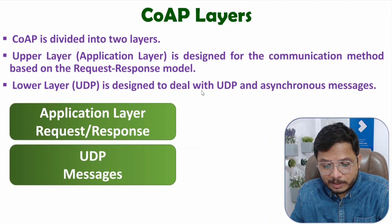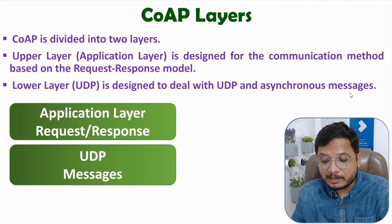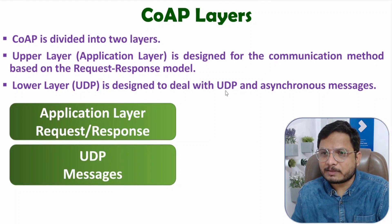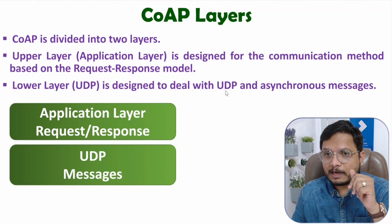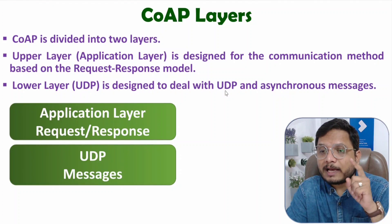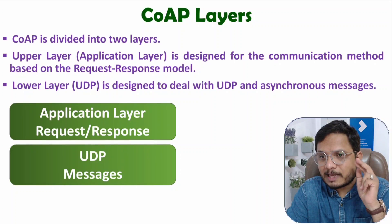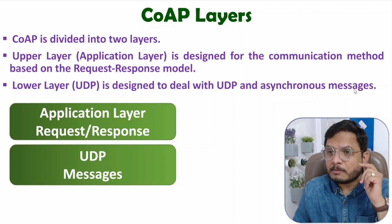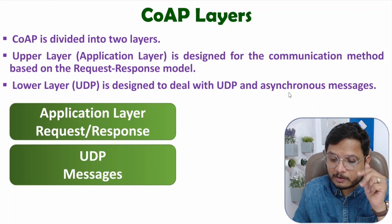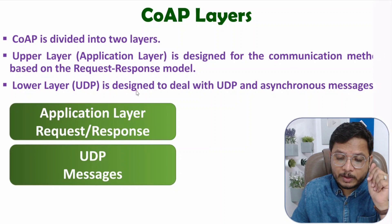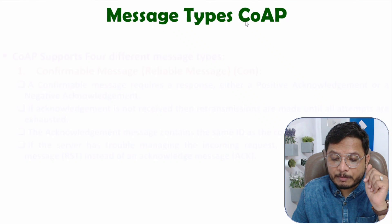The lower layer is UDP, designed to deal with UDP and asynchronous messages. The lower layer mainly functions with UDP protocol. CoAP protocol works with both synchronous and asynchronous messages — that is important to know. It follows UDP protocol. Now I will explain the different message types of CoAP protocol.